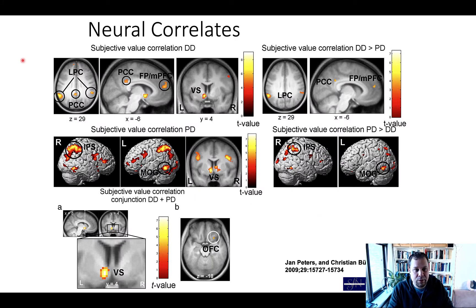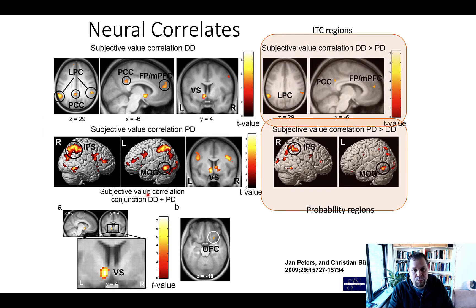They first computed subjective value using hyperbolic discounting functions and then looked for neural correlates in both tasks. Comparing the delay discounting and probability discounting tasks, you can see some overlap in the ventral striatum, but also some different regions involved. In the delay discounting task, lateral parietal cortex and a medial prefrontal region are involved, while the probability discounting task engages other regions, such as the intraparietal sulcus. This means each task has specific networks involved.